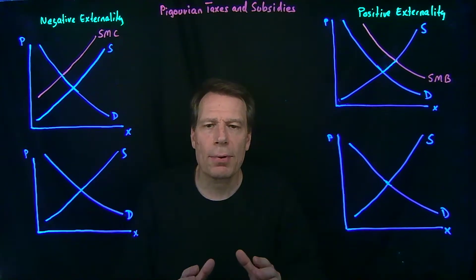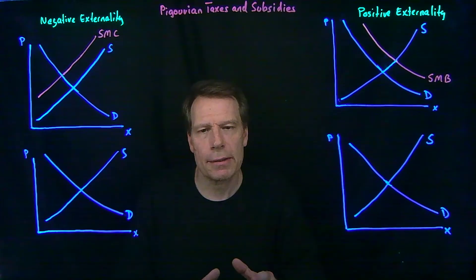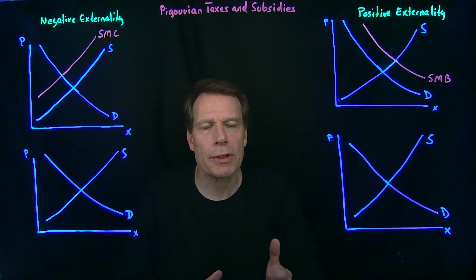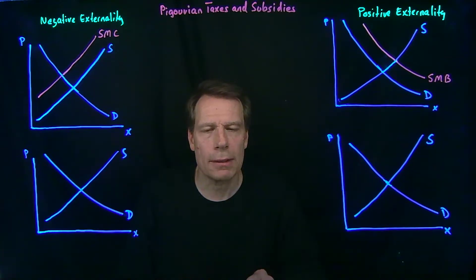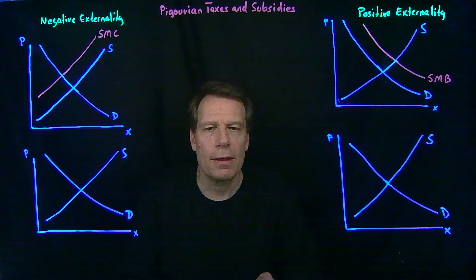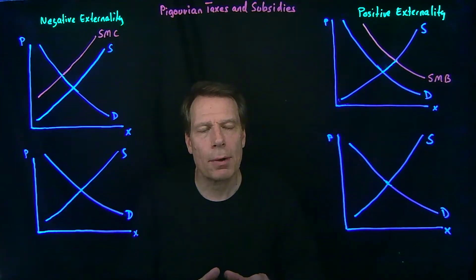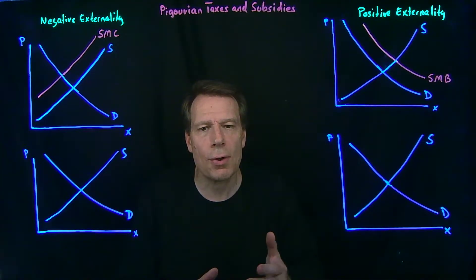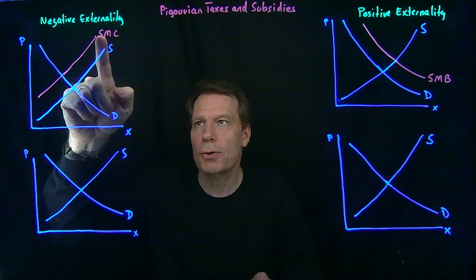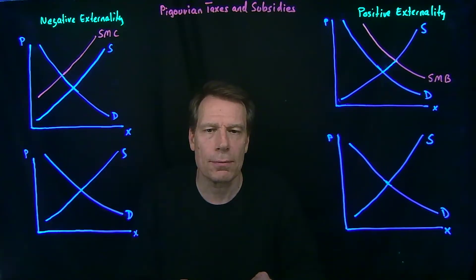We've now seen that in the presence of externalities, markets can produce too little or too much relative to the socially optimal quantity. When the externalities are negative, there are non-market participants that are incurring costs in addition to those that are captured in the supply curve, so that the social marginal cost curve lies above the supply curve.